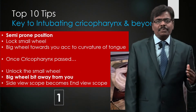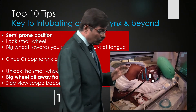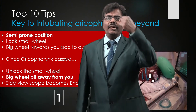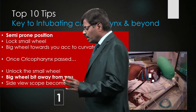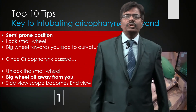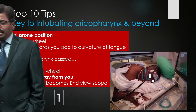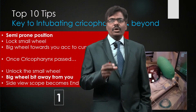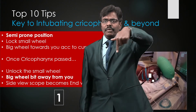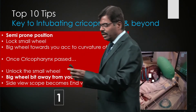Now for the 10 tips. Tip one: how to intubate the oropharynx — the most difficult area, it is a leap of faith. Ask your assistant standing on the opposite side to turn the patient from prone to semi-prone and hold it until you go into the pylorus. Second, lock the small wheel — so you have one less thing to worry about. Third, keep the big wheel away from you so the tip deflects slightly upward, enabling slightly better vision.